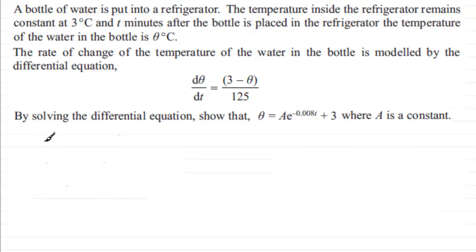Now what I'd want to do first of all is just to copy down the differential equation that we're given: dθ/dt equals (3-θ) divided by 125. And to do something like this, what we do is we separate the variables. We put all the thetas on one side of the equals and all the t's on the other side.